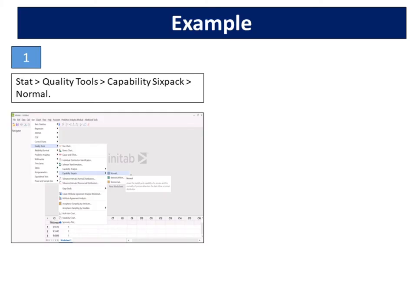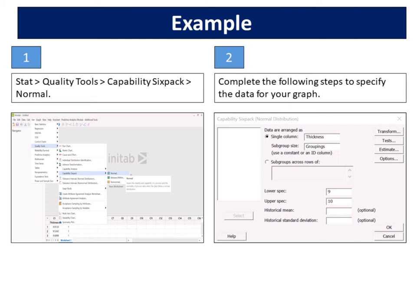Select Stat, Quality Tools, Capability Six-Pack, Normal. Complete the following steps to specify the data for your graph. In a single column, enter thickness. In subgroup size, enter groupings. In lower spec, enter 9. In upper spec, enter 10. Click OK.